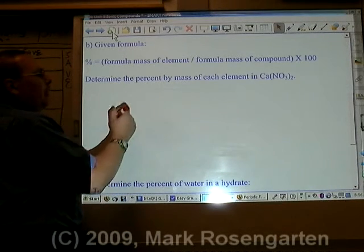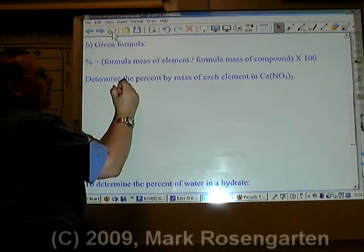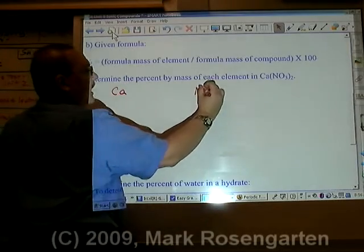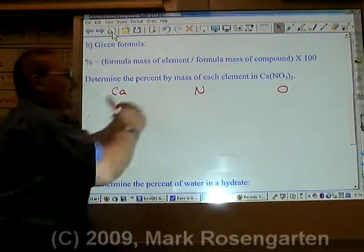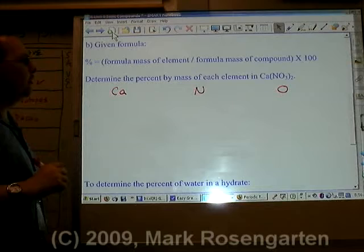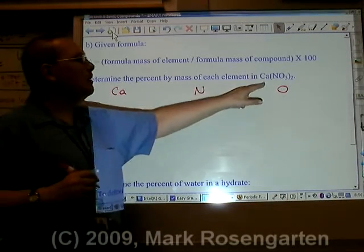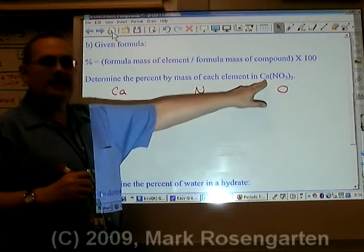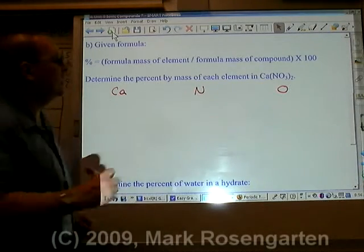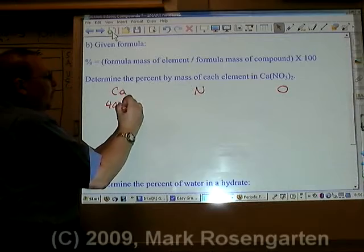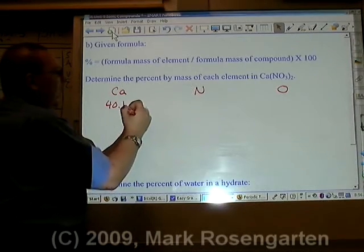Let me show you what I mean. If we want to find the percent composition of calcium, nitrogen, and oxygen in this compound, we need to first look up the total mass that each element contributes to the formula mass. Calcium has an atomic mass of 40.1 grams, and there's only one calcium in that compound.